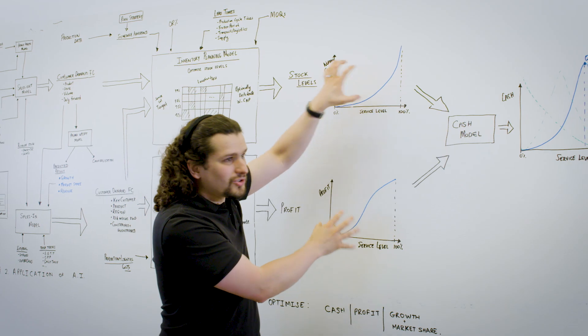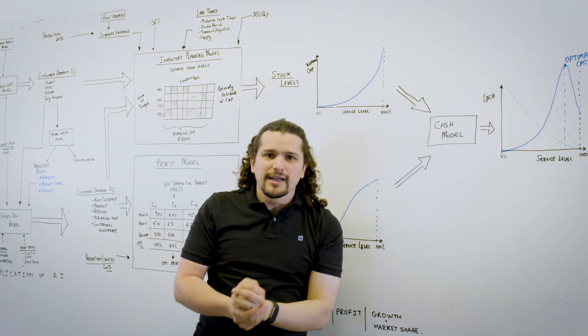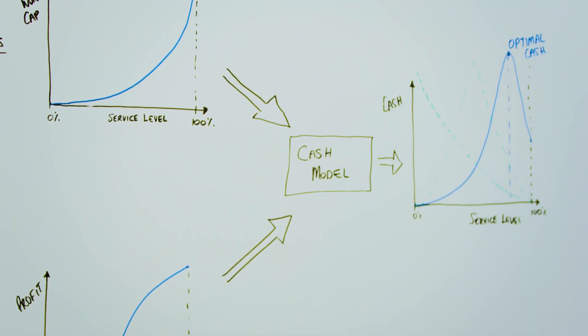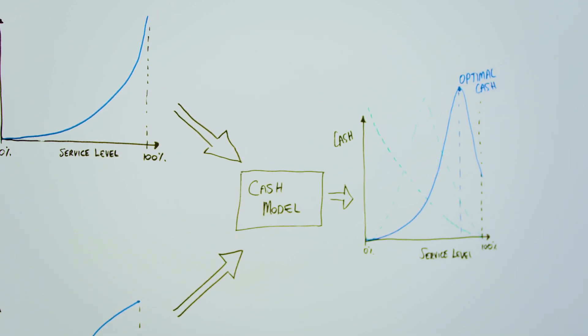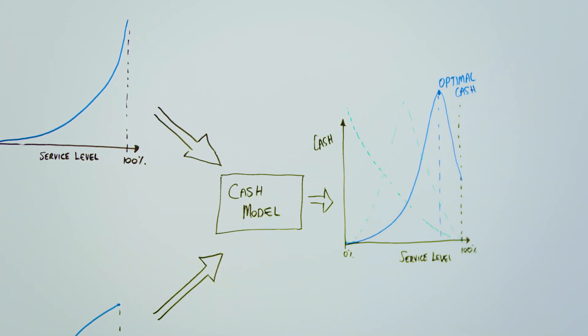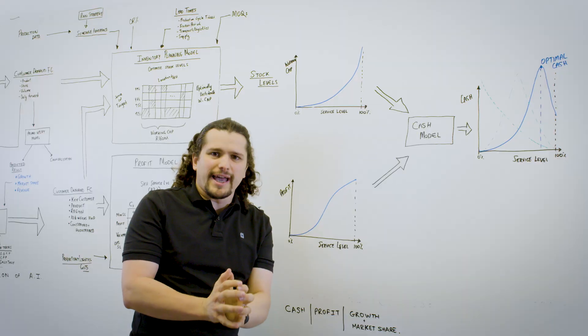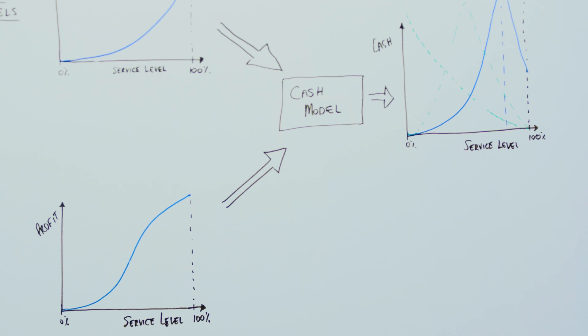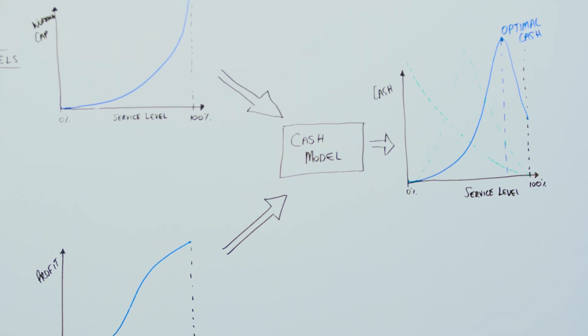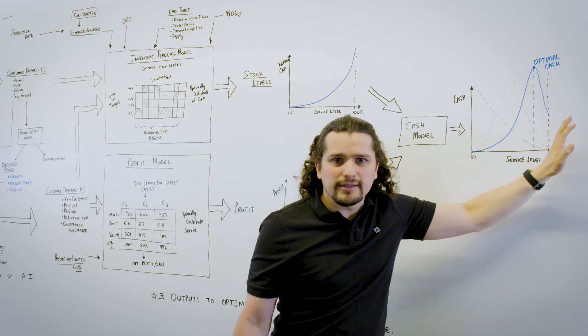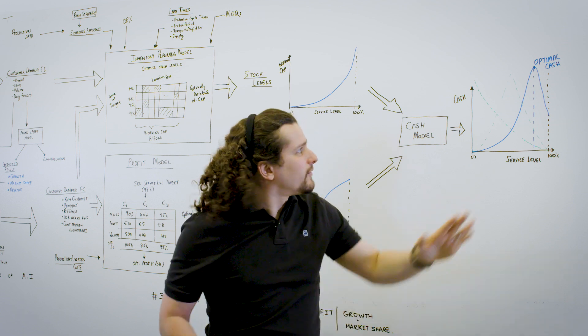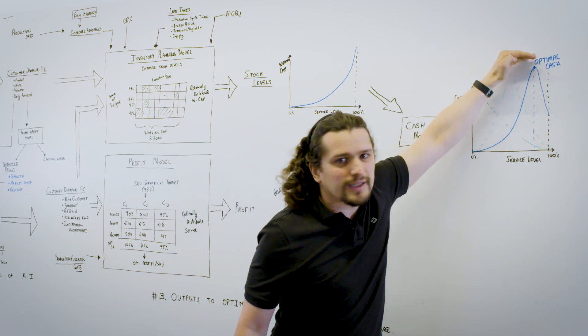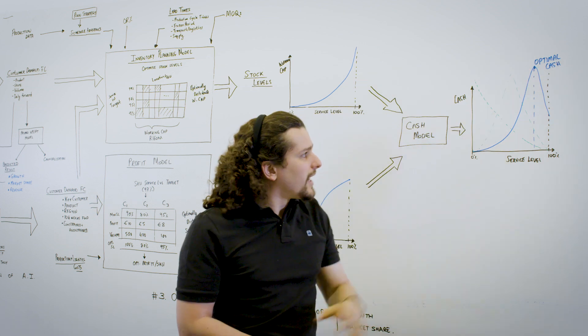Bringing these two together is where it gets really exciting, because now you can understand the impact of your strategy on cash. So you can understand for a given service level for a product, what is the optimal amount of cash that I can make. Really, just a proxy for this is the difference between profit and working capital. And this curve will be different for every product. But for every product, the platform will be able to say, here is the optimal point and the optimal cash that you can make out of this product.